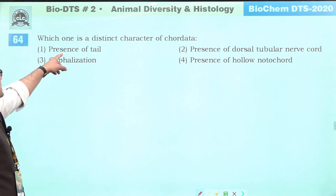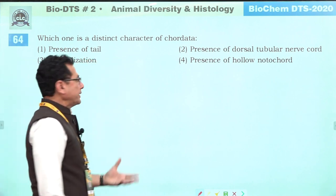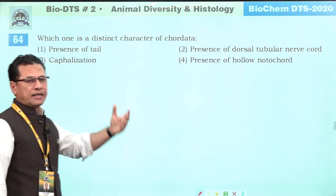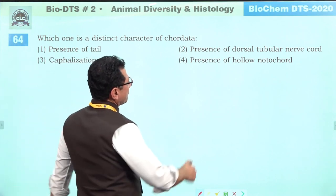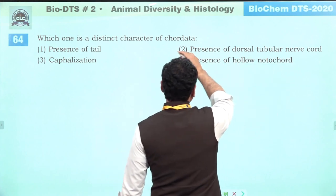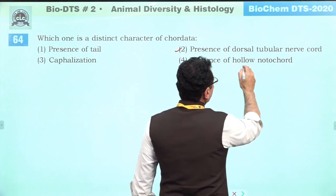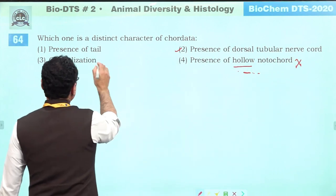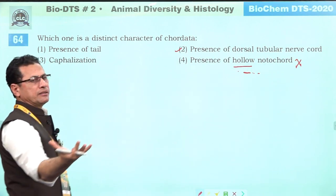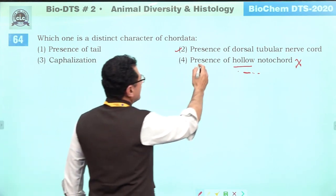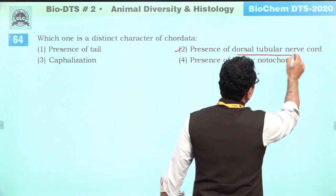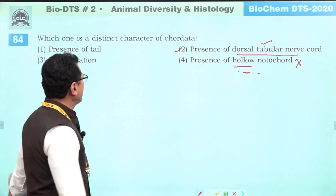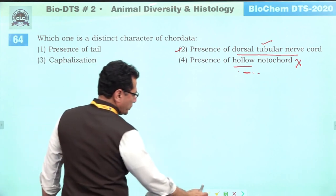What is a distinct character of chordates? Presence of tail alone does not make an animal a chordate. Presence of dorsal tubular nerve cord — absolutely correct. Hollow notochord — notochord is always solid, so incorrect. Cephalization starts from Platyhelminthes. Correct answer is presence of dorsal hollow or tubular nerve cord — answer is two.